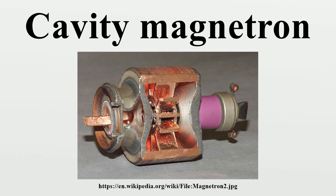The first form of magnetron tube, the split anode magnetron, was invented by Albert Hull in 1920, but it wasn't capable of high frequencies and was little used. Similar devices were experimented with by many teams through the 1920s and 30s. On November 27, 1935, Hans-Erik Holman applied for a patent for the first multiple cavities magnetron, which he received on July 12, 1938. But the more stable klystron was preferred for most German radars during World War II.